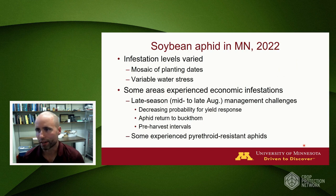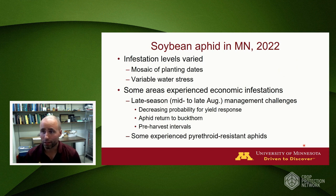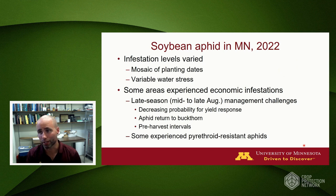In areas that were favorable due to planting dates and timely rains, these later season infestations became challenging. When we get into mid to late August, there's a decrease in probability of getting a yield response or return on investment for insecticide applications. Aphids can also leave to go to buckthorn, their overwintering host. We also have the complication of pre-harvest intervals, and some growers again experienced pyrethroid-resistant soybean aphids, complicating or reducing the efficacy of their insecticide applications.